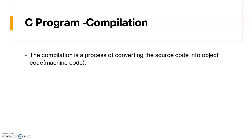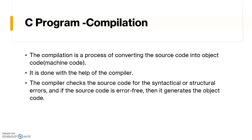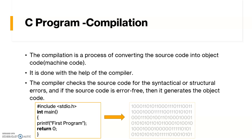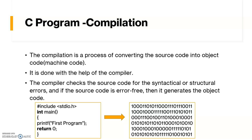The compilation process converts our source code to object code. This is done by the compiler — we are using Turbo C compiler. During compilation, the compiler checks for syntactical errors in the source code. If errors are found they are displayed; if no errors are found, the object code is generated, also called machine code, which is in the form of ones and zeros.